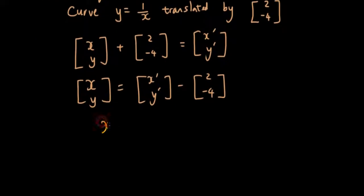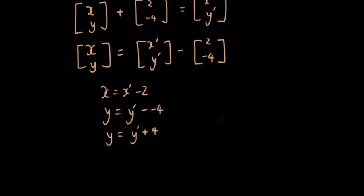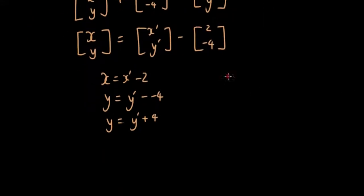x is equal to x' minus 2, y is equal to y' minus negative 4. So y is equal to y' plus 4. Now substituting these into our formula, y is equal to 1 over x.